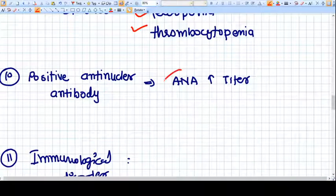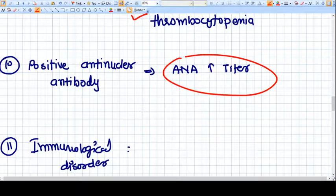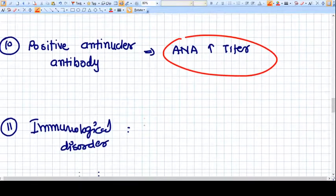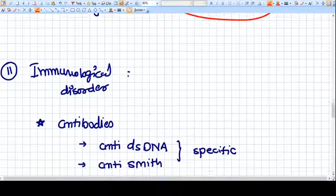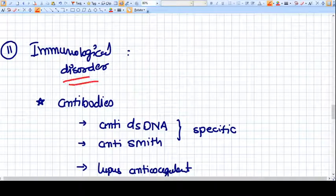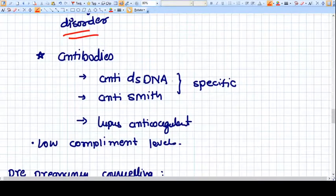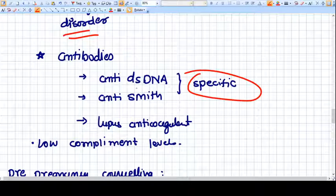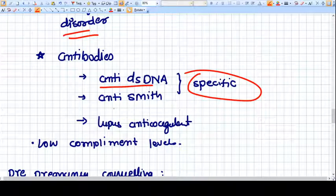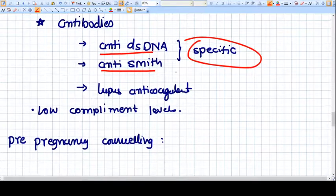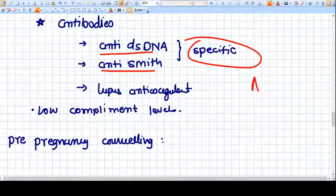Immunological disorders - you find very specific antibodies of SLE like anti-double stranded DNA antibody, anti-Smith antibody, lupus coagulant, APS (antiphospholipid antibody syndrome) which is also part of this systemic disorder.